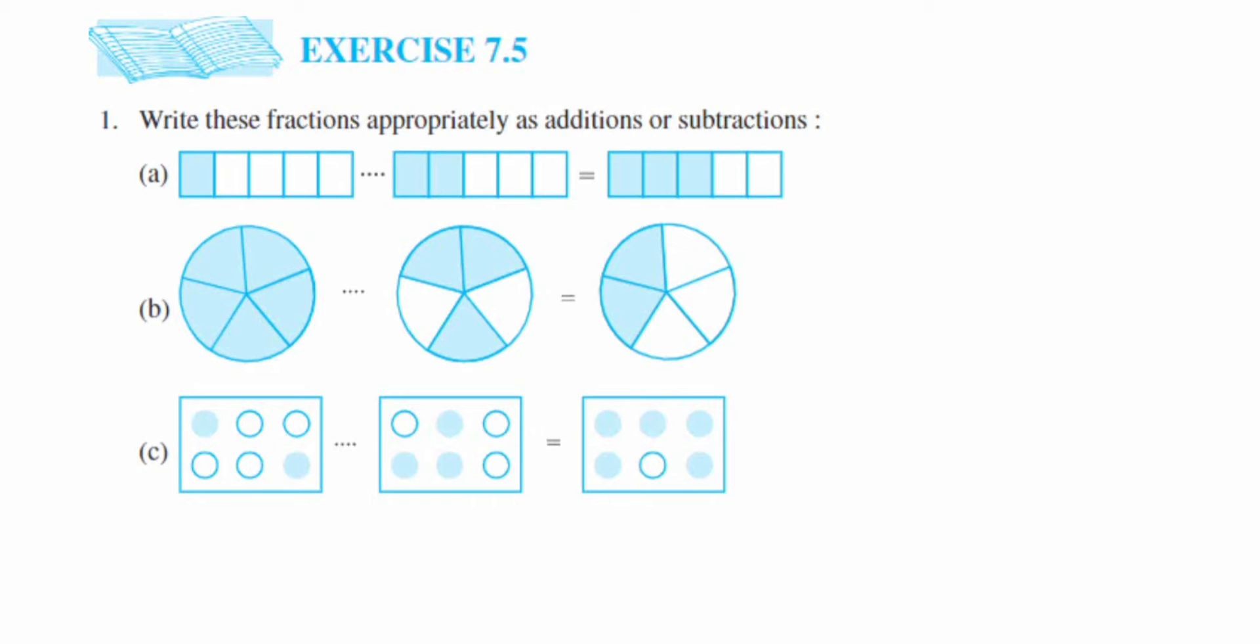Hey everyone, so here I'm doing Exercise 7.5, first question. This is from the fraction chapter of a class six textbook. The question here is write these fractions appropriately as addition or subtraction. First one, so here they have given a one rectangle.